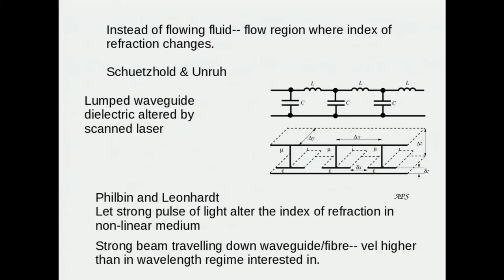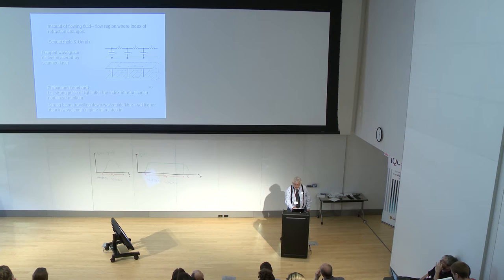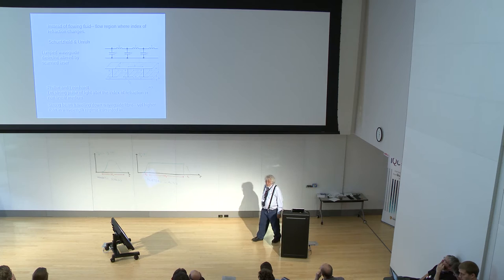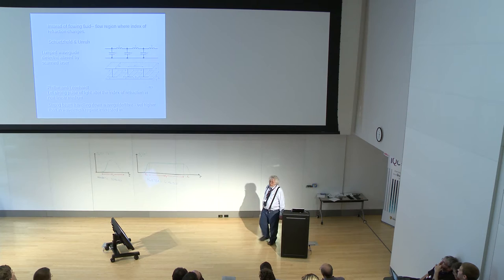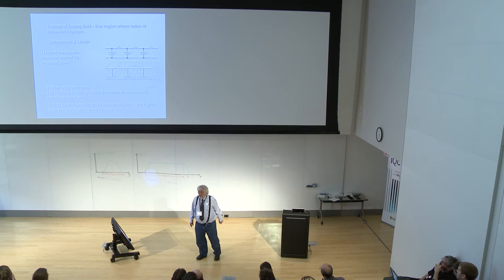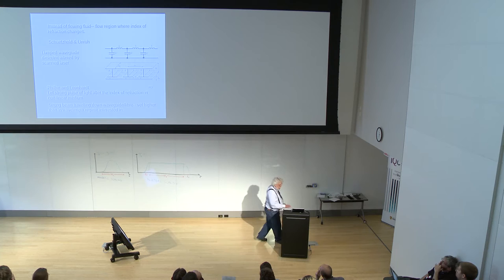So what one does instead is instead of flowing the fluid you flow the black hole. You have the black hole running. This was a suggestion that Ralph and I made a number of years ago in which we had a lumped circuit basically a wave guide and in which we proposed altering the index of refraction in the wave guide to have the waves travel more slowly in places where the index of refraction between the capacitors is increased, and if we move that region such that the velocity of that region is greater than the velocity of the electromagnetic waves inside that region but less than outside one gets an analog of a black hole.